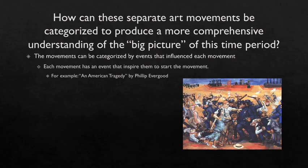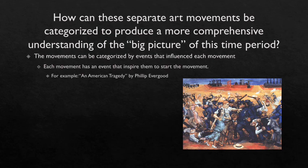The question the professor asked was: how can these separate art movements be categorized to produce a more comprehensive understanding of the big picture of this time period? My answer is that the movements can be categorized by events that influenced each movement — every movement has something that influenced it during that time.